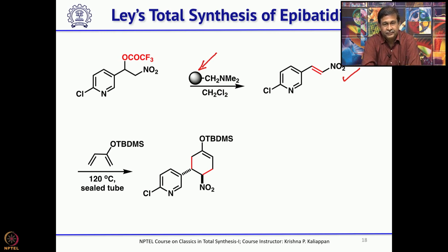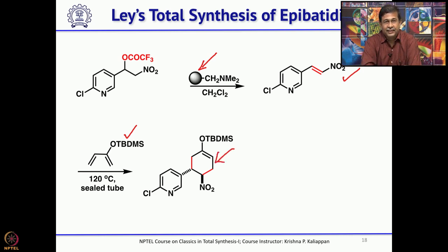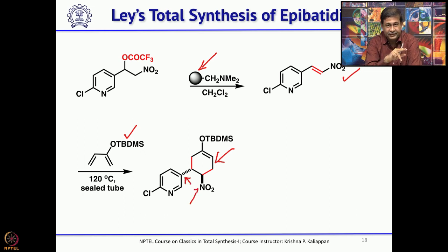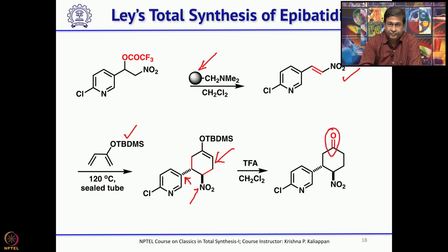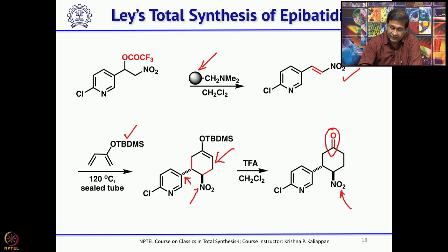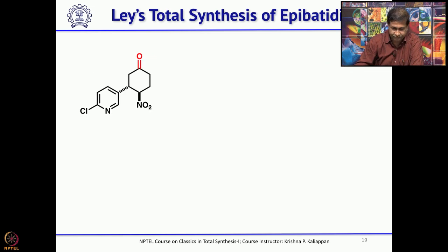Once the nitroalkene was in hand, a Diels-Alder reaction was performed with a diene bearing an electron-donating TBS enol ether group in a sealed tube, giving a trisubstituted cyclohexene. In this product, the nitro group and the aryl group are trans to each other, and the TBS enol ether can be hydrolyzed and oxidized to give the ketone. To proceed further, this ketone should be reduced to an alcohol, the alcohol converted to a good leaving group, and the nitro group reduced.